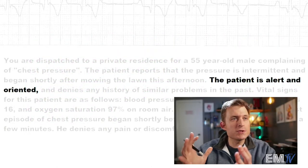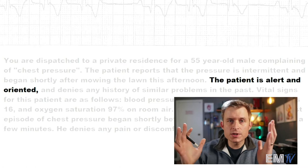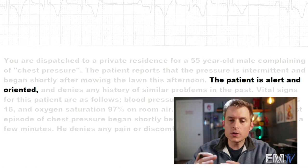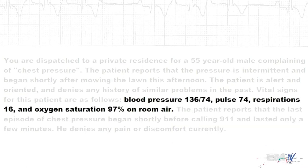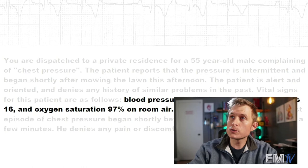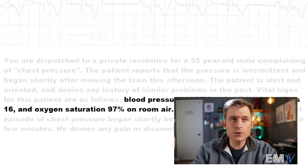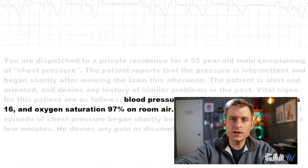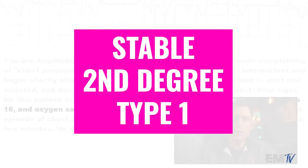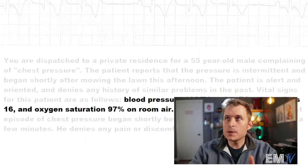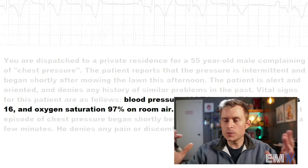Right out the gate, the first piece of highlighted text here says the patient is alert and oriented, so they are not altered in any way. The vital signs are: blood pressure 136 over 74, pulse 74, respiration 16, oxygen saturation 97% on room air. So based on CHAD criteria, there's no sign of end organ failure, no sign of hypotension, the patient is not altered, and the patient does not appear to be dyspneic. So I would diagnose this as a stable second-degree type 1 heart block, or stable Mobitz 1, or stable Wenckebach rhythm — either one would be considered acceptable.